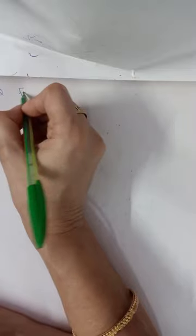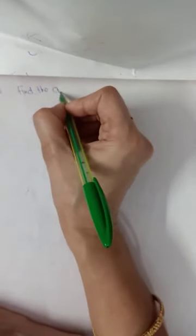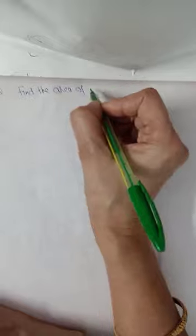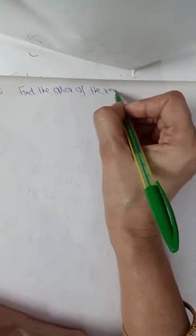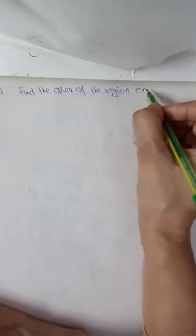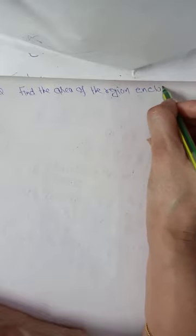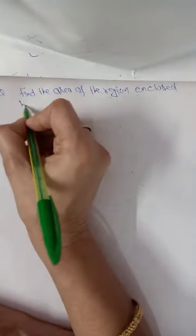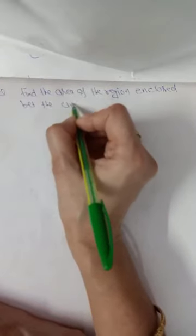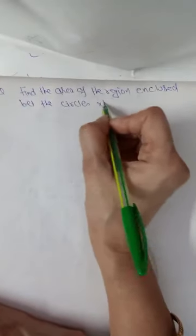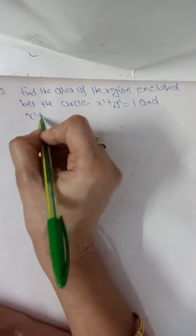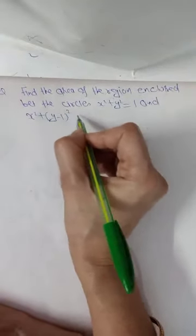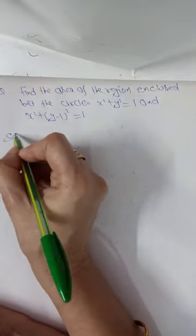Find the area of the region enclosed between the circles x² + y² = 1 and x² + (y - 1)² = 1.